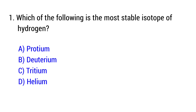Question number 1. Which of the following is the most stable isotope of hydrogen? The right answer is option A, protium.